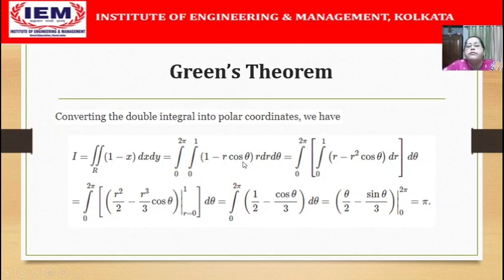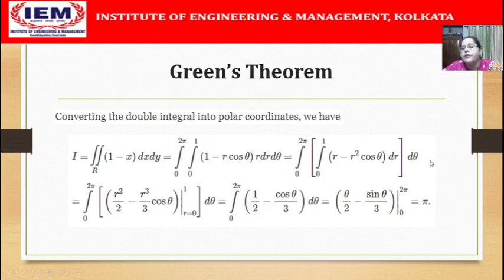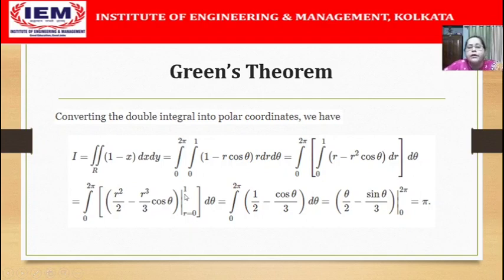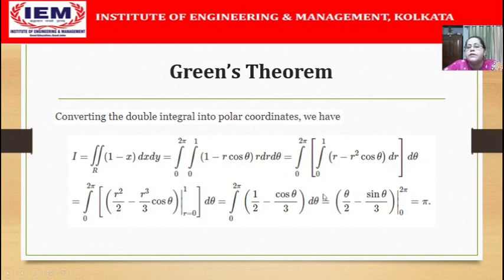Simplifying, the integrand becomes (r minus r² cos θ) dr, which we integrate with respect to r to get r²/2 minus (r³/3) cos θ, evaluated from r = 0 to 1. Putting in the limits gives half minus cos θ/3. Integrating again with respect to θ gives θ/2 minus sin θ/3, and putting in the limits from 0 to 2π — noting that sin 0 and sin 2π are both 0 — the final answer is π.